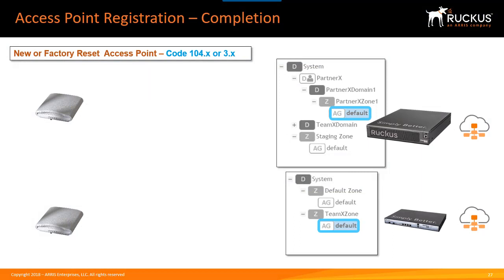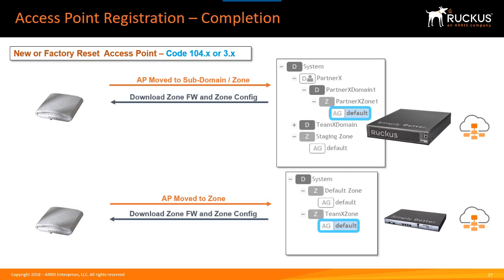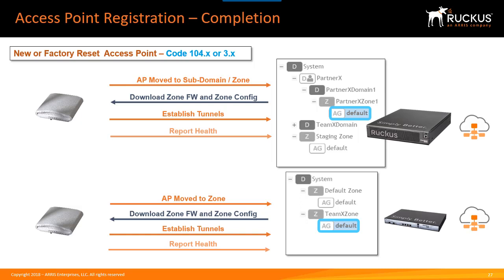After moving the AP to the appropriate zone, the zone configuration and zone firmware are pushed to the AP. If the AP is running a lower version of code than what's on the controller, the new firmware is pushed out and the AP reboots. Then the zone's configuration is applied, tunnels are established from the AP back to the controller, the AP reports its health, and any events, errors, or alarms are automatically sent up to the controller for review.